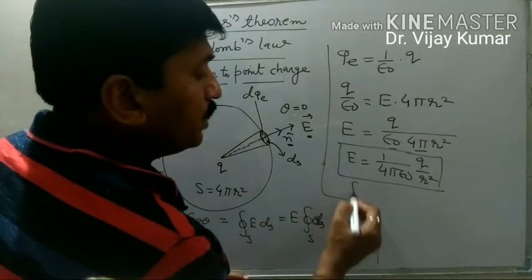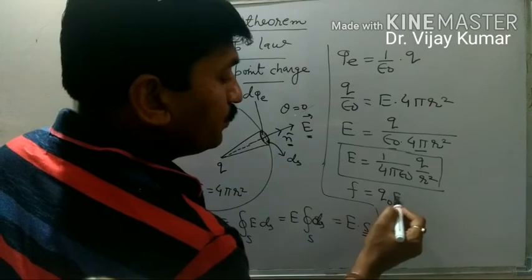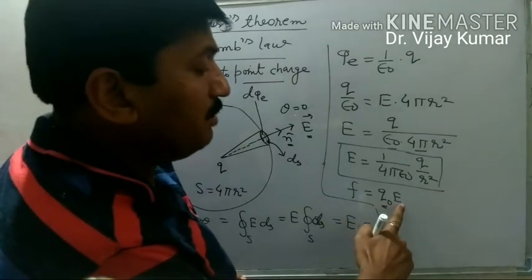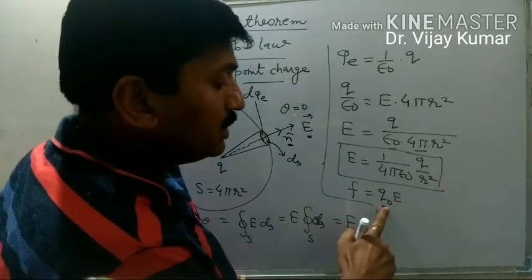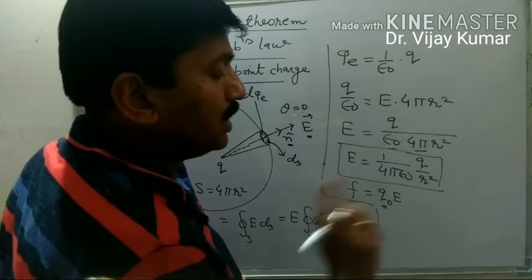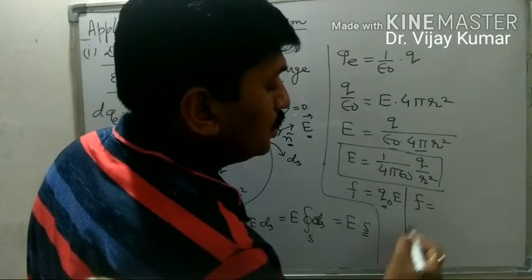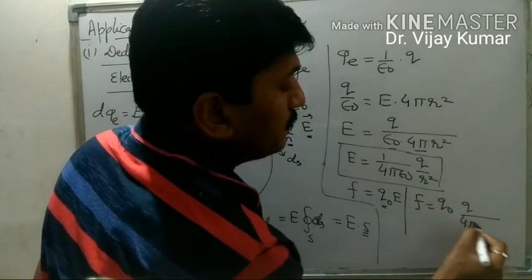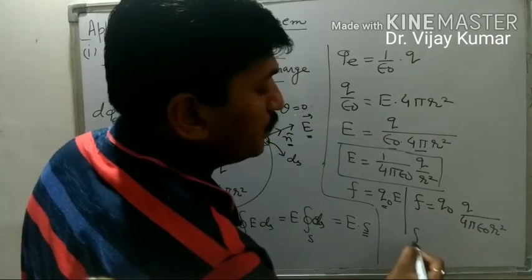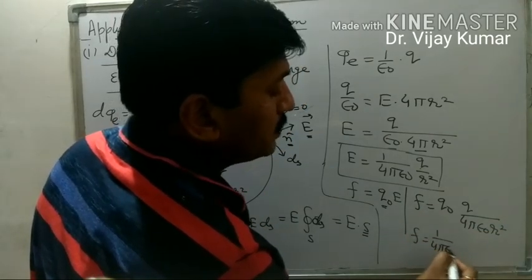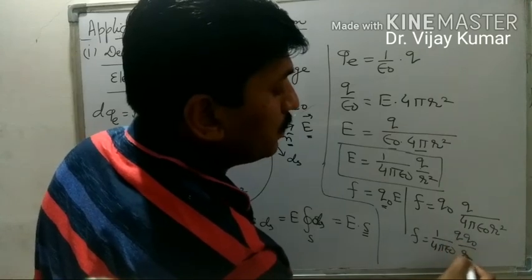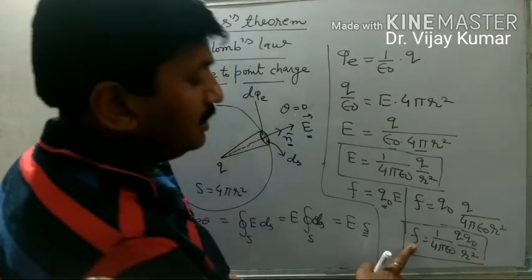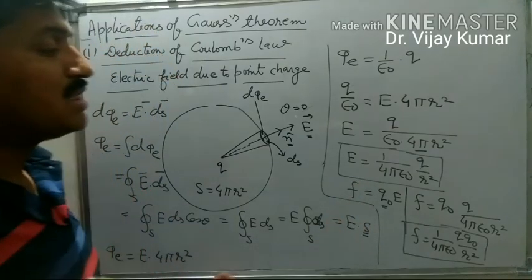We know that force F equals E times a test charge particle. If a test charge q naught is available inside the electric field E, then the force on this charge particle is F equal to q naught into E. So F equals q naught times q upon 4 pi epsilon naught r square, and force becomes 1 upon 4 pi epsilon naught times q times q naught upon r square. This is the force between charge q and q naught, and that is Coulomb's law.